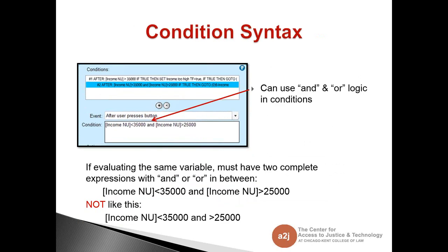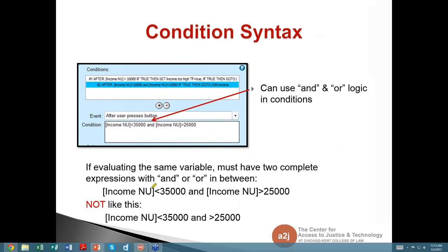You can also use the word 'and' or the word 'or' to evaluate the same variable. You must have two complete expressions with the 'and' or 'or' in between them. The correct way: you have the variable, the full complete expression, the word 'and,' then the full complete expression again. The incorrect way — the bottom example — will not evaluate whether the income is less than 35,000 but still greater than 25,000; this will fail and error out. You must have the variable, the operator, the number, the word 'and' or 'or,' and then the same complete expression on the right side as well.